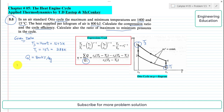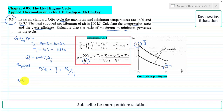We are required to calculate three quantities: first, the compression ratio V1/V2; second, the cycle efficiency; and third, the ratio of maximum to minimum pressures in the cycle. Looking at the PV diagram, the maximum pressure is P3 and the minimum pressure is P1, so we need to find the ratio P3/P1.